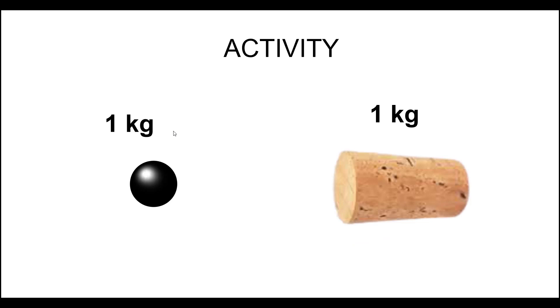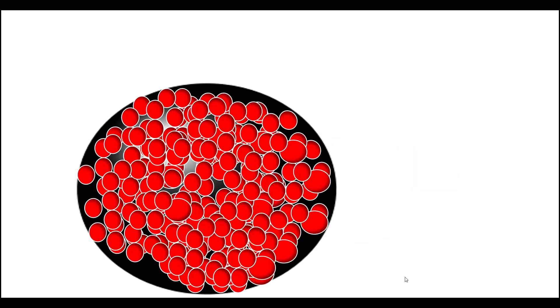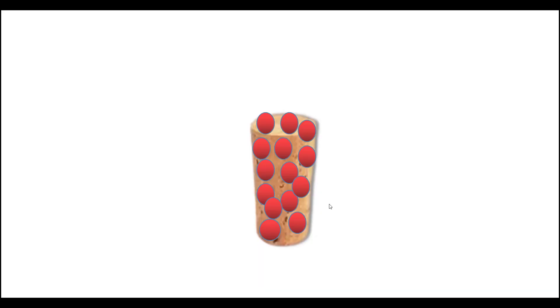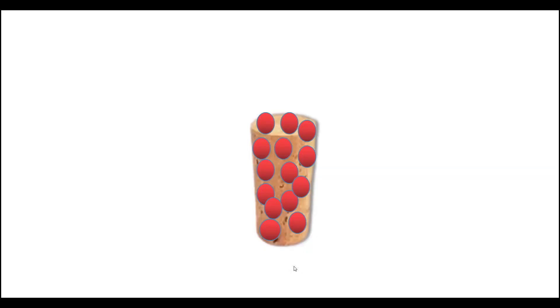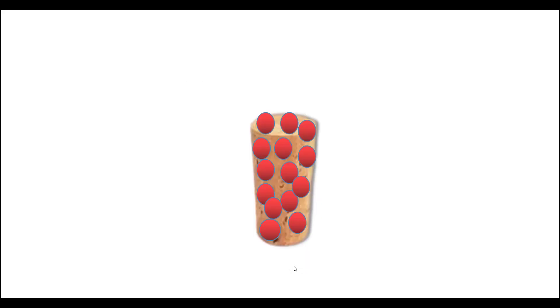Take the mass of the iron ball as 1 kilogram and the mass of the cork as 1 kilogram. When you compare the number of molecules present in the iron ball and the number of molecules present in the cork, the number of molecules present in the cork is very very less compared to that of the iron ball. The density of this iron ball is high compared to that of the density of this cork.